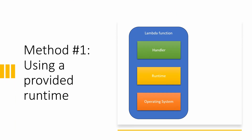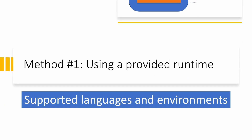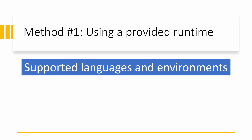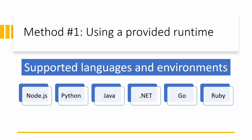Method number one: using one of the provided runtimes. A developer chooses one of the provided runtimes and implements the handler. Lambda supports multiple major programming languages and environments through provided runtimes. Each runtime contains a language-specific environment that passes events to the handler and relays responses back to the AWS Lambda service. After choosing a runtime, a developer is only responsible for implementing the handler. Currently Lambda provides runtimes for the following popular programming languages and environments.